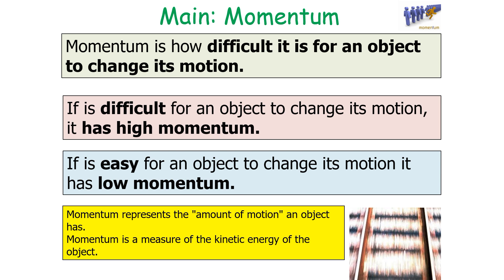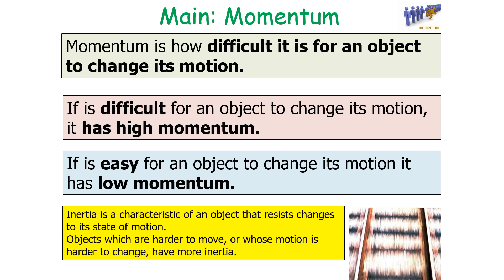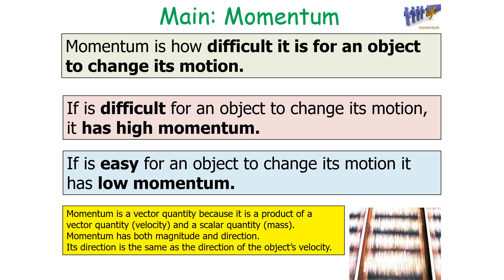Momentum represents the amount of motion an object has. It can also be thought of as a measure of the kinetic energy of the object, whilst inertia is a characteristic of an object that resists change to its state of motion. Objects which are harder to move or whose motion is harder to change have more inertia. Momentum is a vector quantity because it's the product of a vector quantity and a scalar quantity.